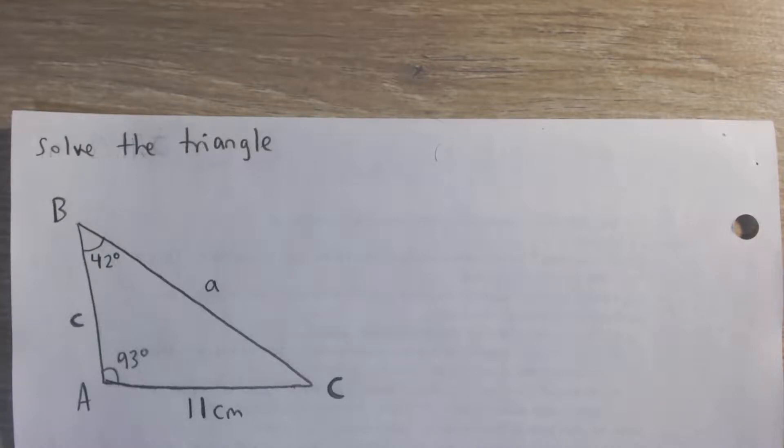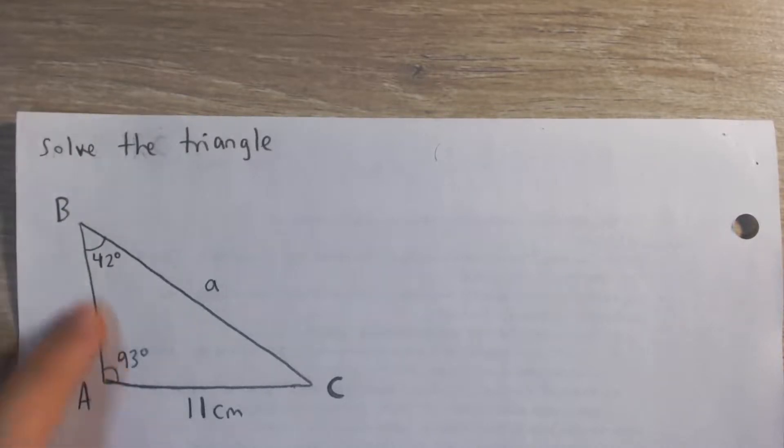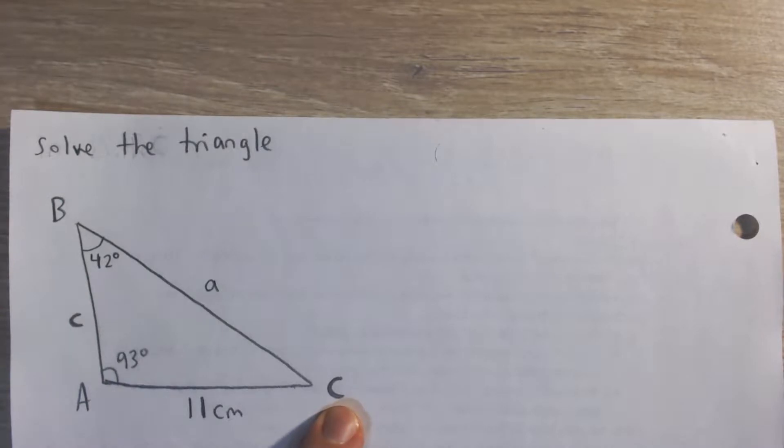Okay, so here we have to solve the triangle. We have triangle ABC, and I'm going to label the side lengths so that they're the same as the opposite of their angle.